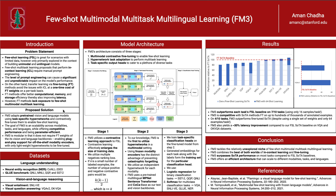FM3 adapts pre-trained vision and language models using task-specific hypernetworks and contrastively fine-tunes them to enable few-shot learning. The unique selling point of FM3 is a scalable architecture that spans modalities, tasks, and languages while offering competitive performance and being parameter-efficient.